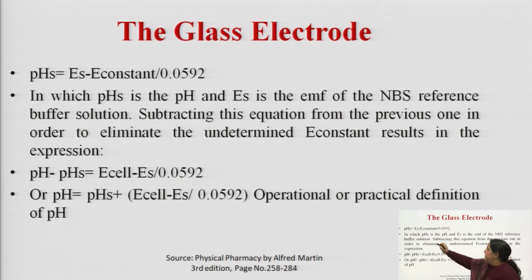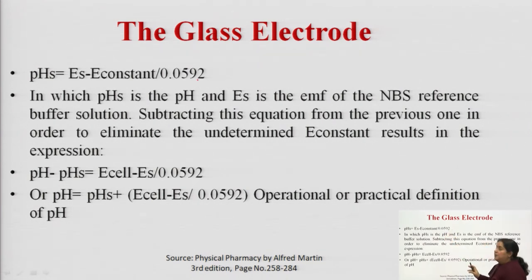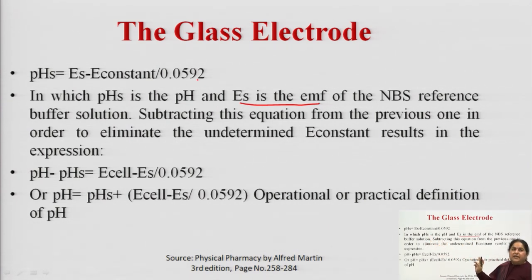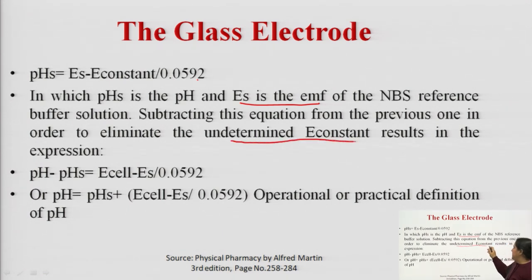The equation becomes: pH_S = (E_S − E_constant) / 0.0592, where pH_S is the pH and E_S is the EMF of the NBS reference buffer solution.